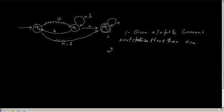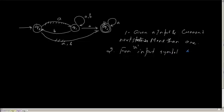I don't know what the exact state I am reaching is. While I am in state Q2, I have only mentioned the symbol A, not mentioned the symbol B. So for the input symbol B, we may or may not have any transition.